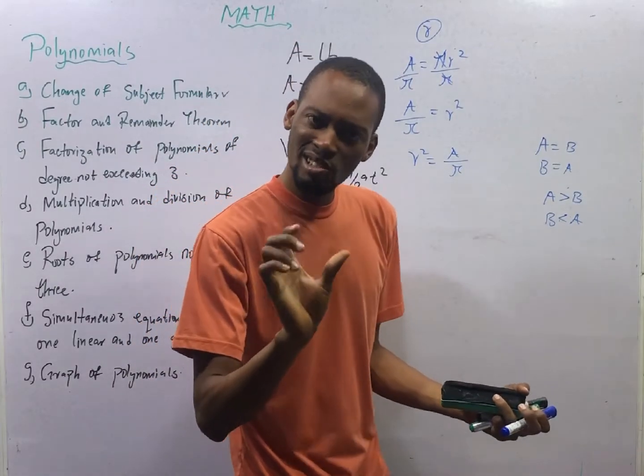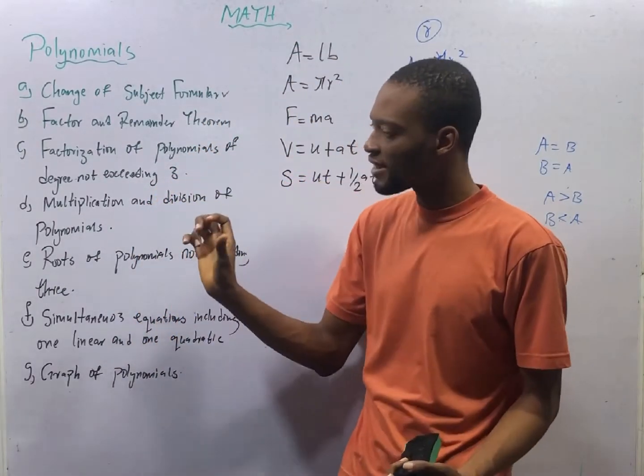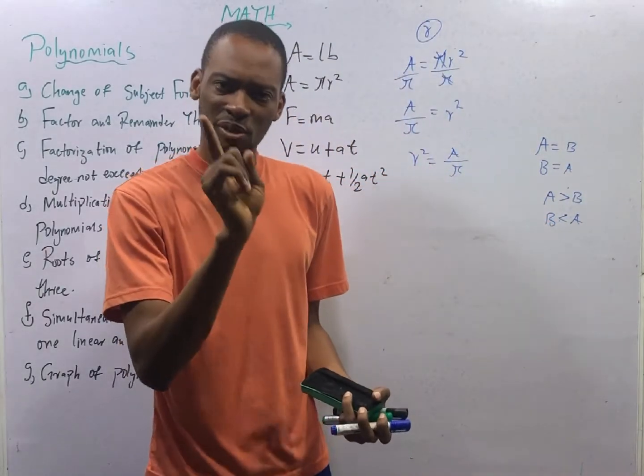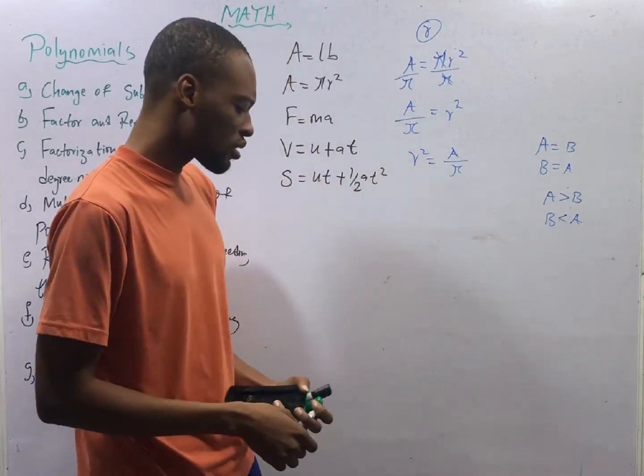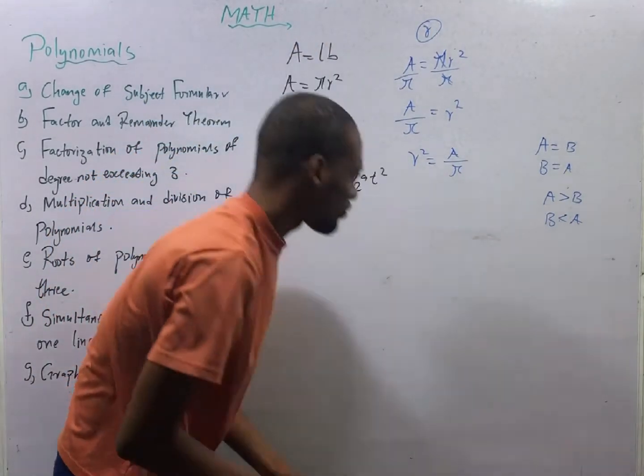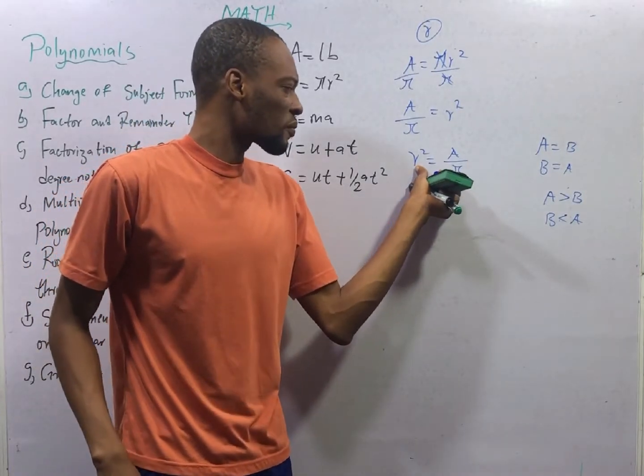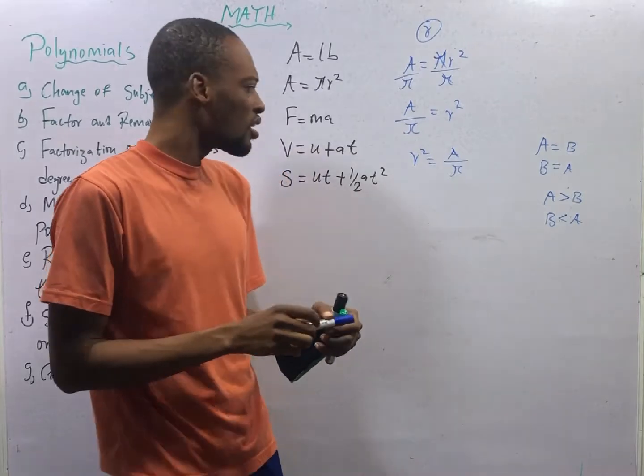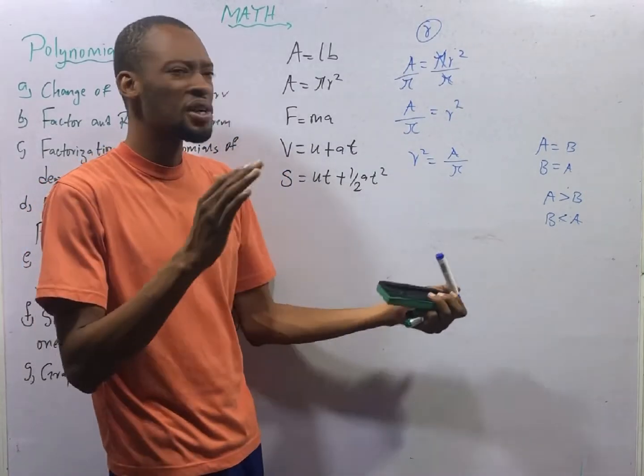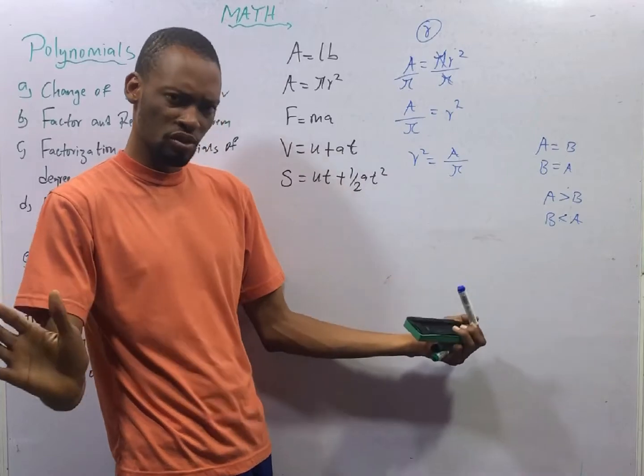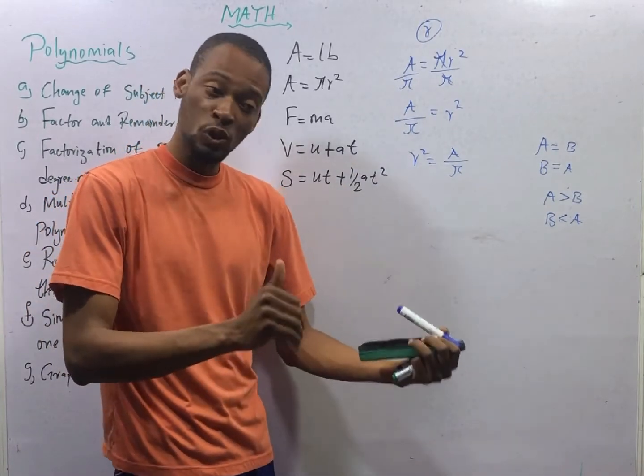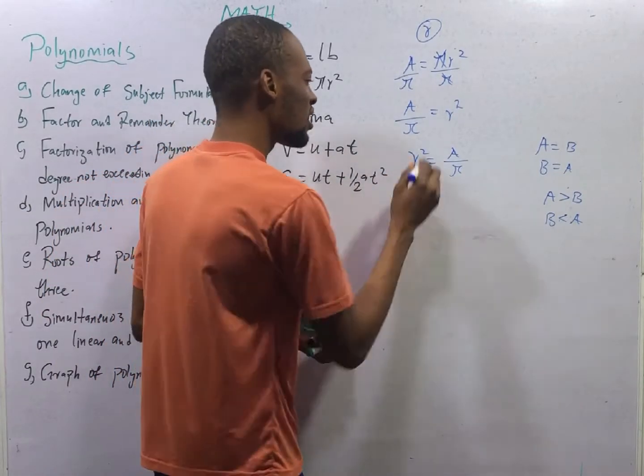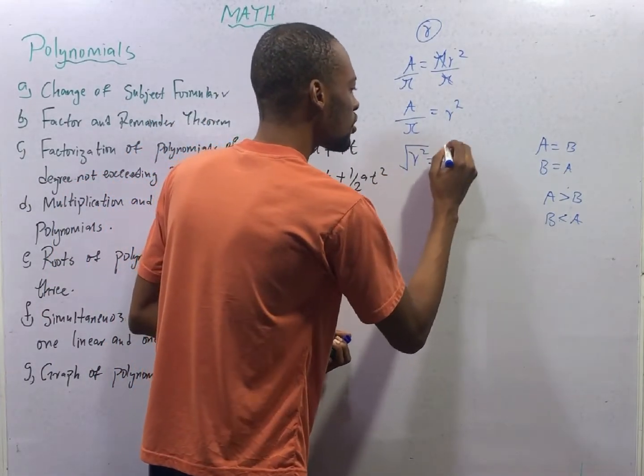Here, R squared equals A over π. Nobody is asking us to make R squared the subject formula. We are only told to make R the subject formula. This is squared. And I told you that to remove squared, or to remove squared, you must square root both sides of the equation. That is the law. And to remove square root, you must square both sides. So to remove this square, just square root, square root.